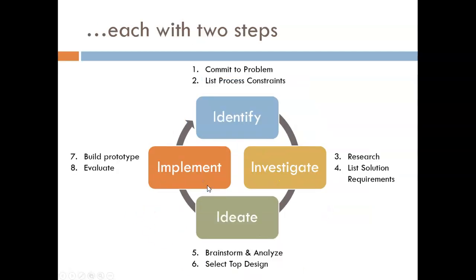Each of these phases is broken down into two more specific steps. Under identify, we first commit to a specific problem. We need to know exactly what we're trying to solve and care about it before diving in. Then we list process constraints, or all the resources and challenges we have with us in this project.